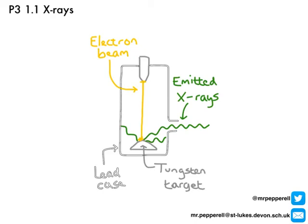We can produce x-rays if we take a beam of fast-moving electrons and fire it at a tungsten target inside a vacuum tube. This causes the atoms of the target to start to emit energy as x-rays, emitted in all directions but coming out through a filtered hole. The x-rays from this x-ray tube can now be used to produce an x-ray photograph — the correct word for that is a radiograph.